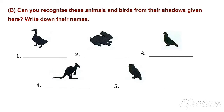Can you recognize these animals and birds from their shadows given here? Write down their names. Number 6. Have you found the answer? First one — duck.